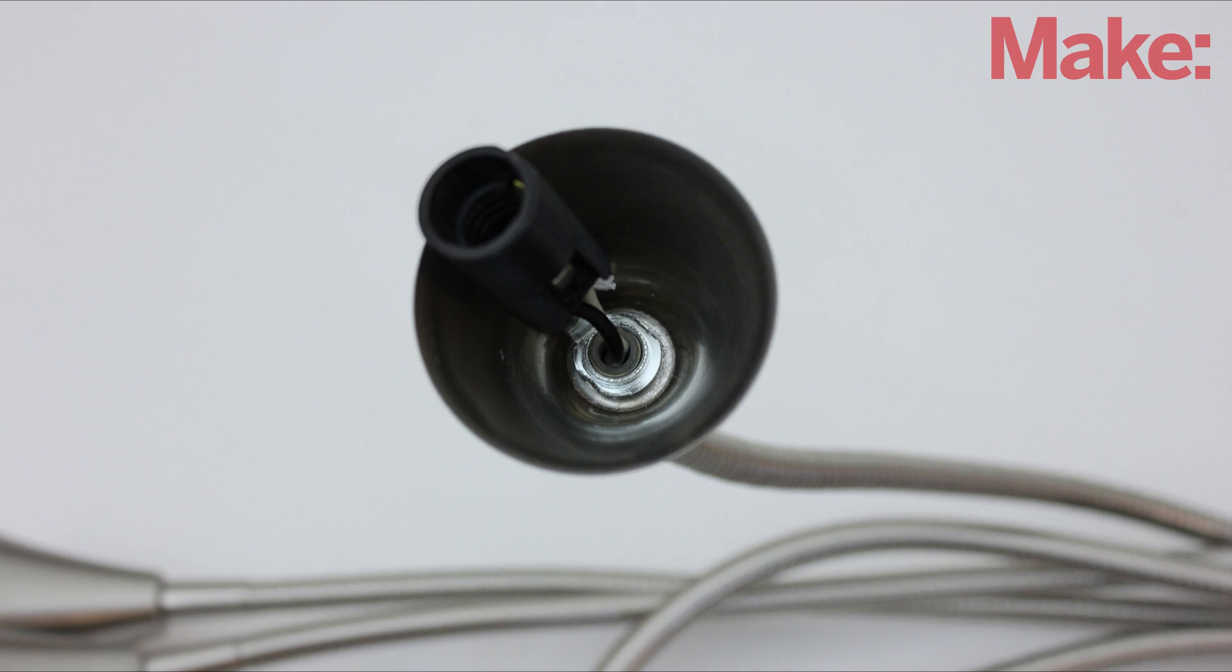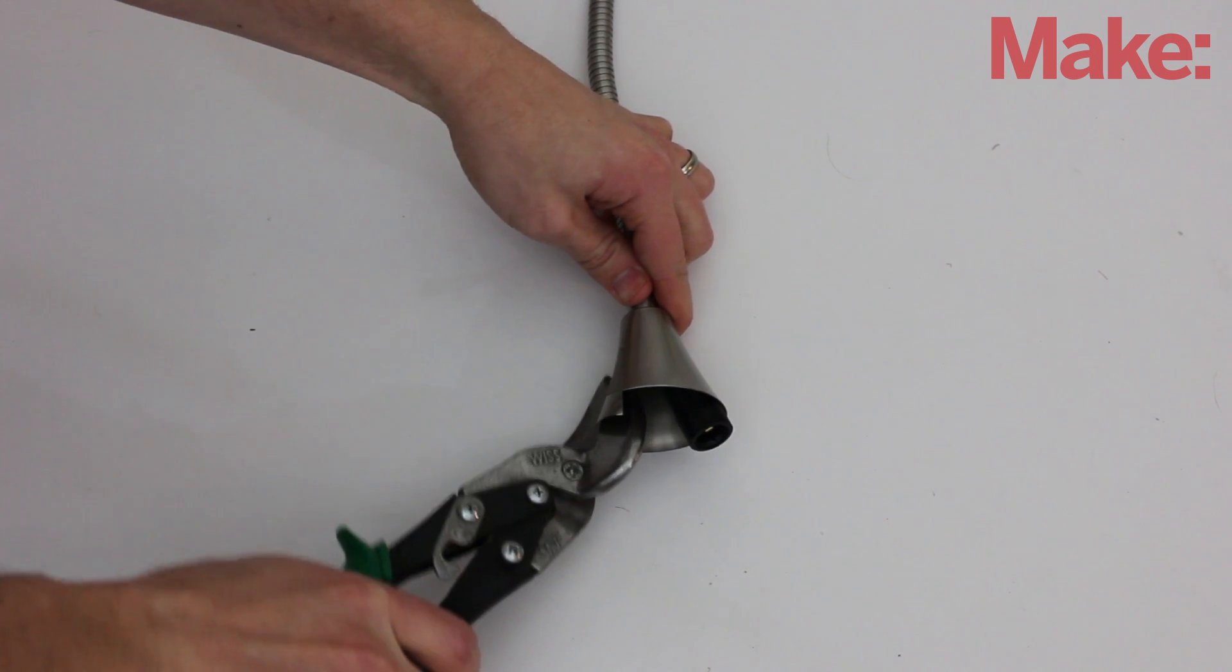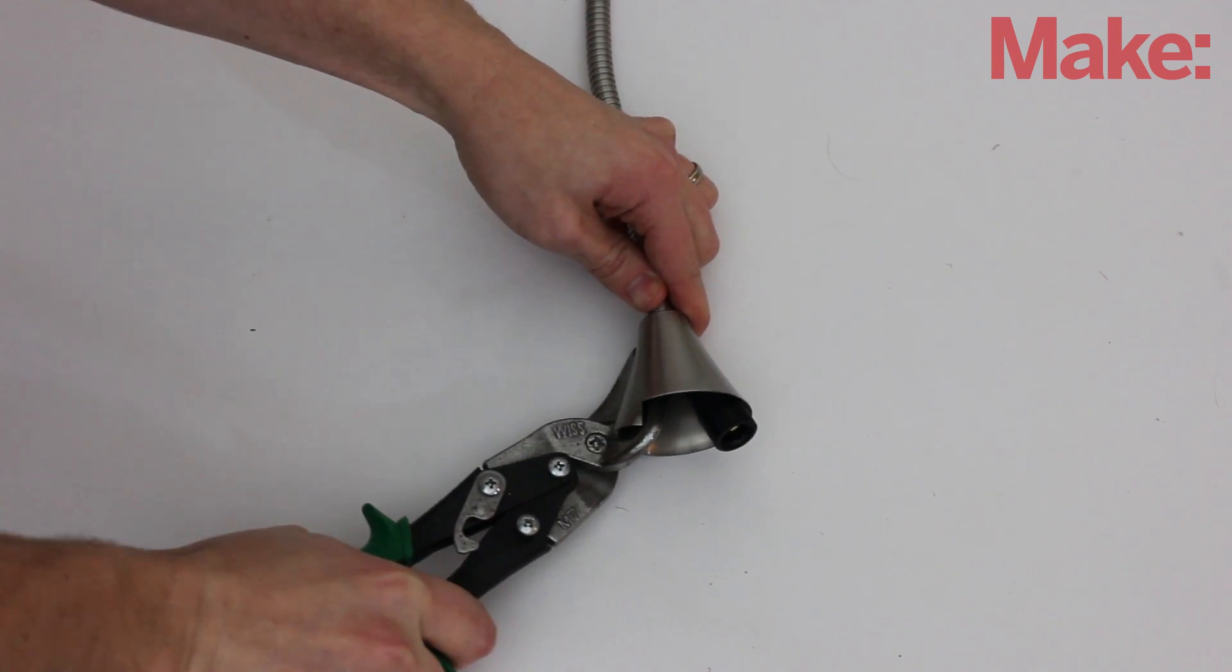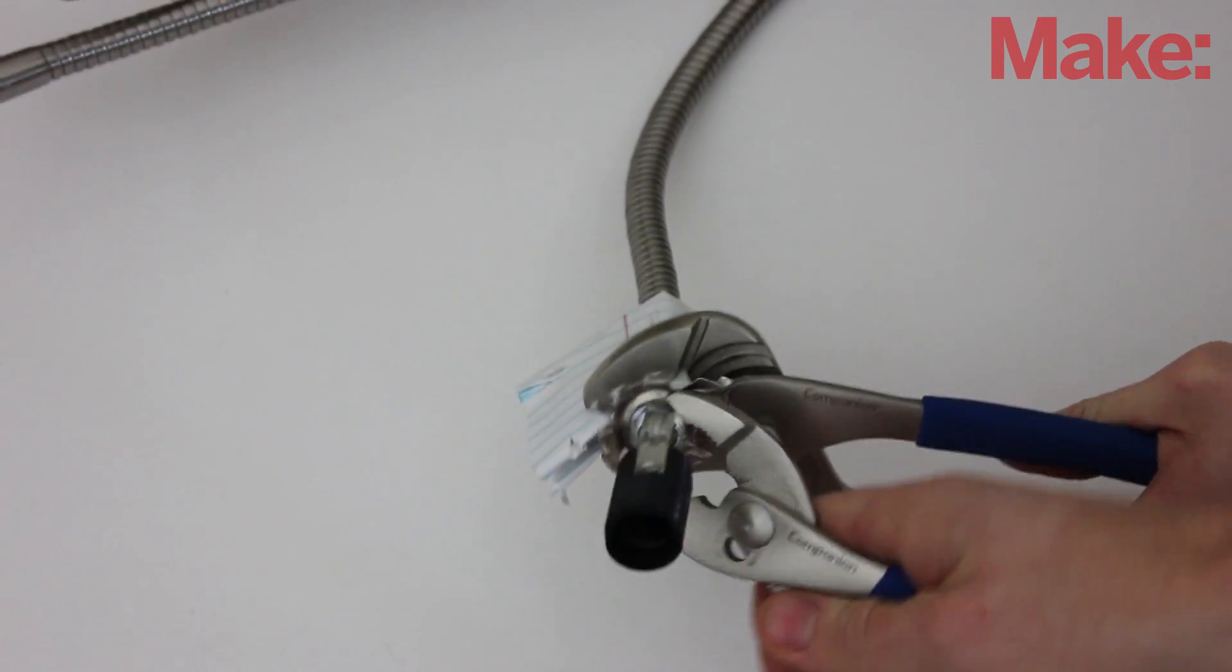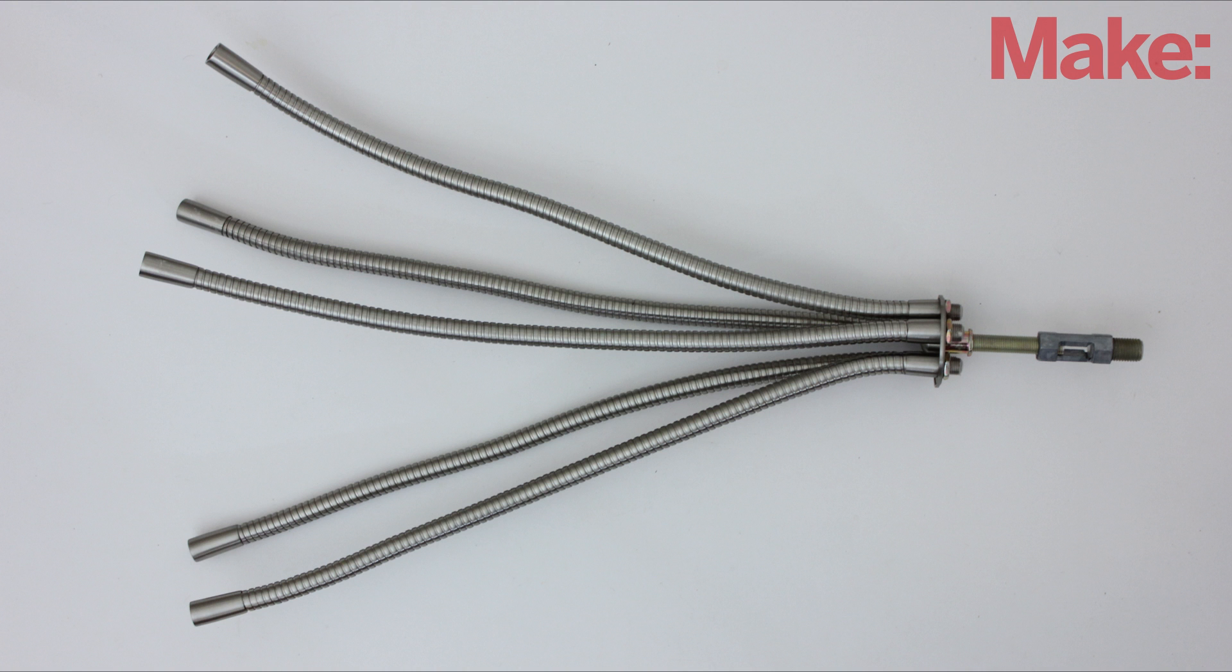Next, you need to remove the light socket. If you're lucky, it will just unscrew. But on my lamp, the fixture was so tight that I had to use a pair of tin snips to cut away the base of the cover so that I could get a good grip on it with pliers. Eventually, I got all the light sockets removed.